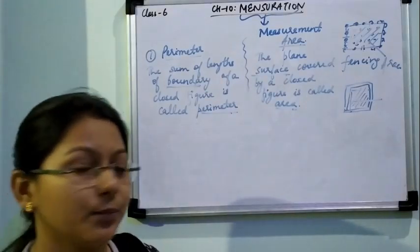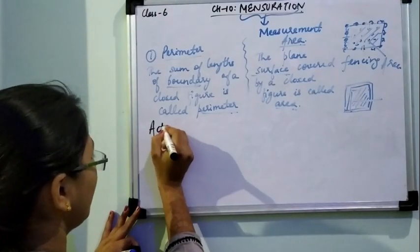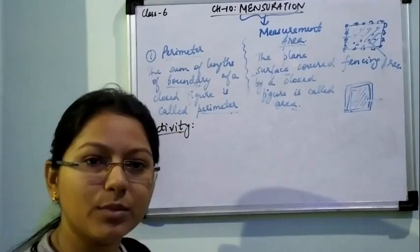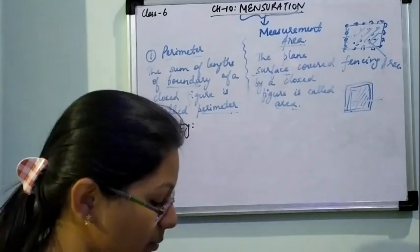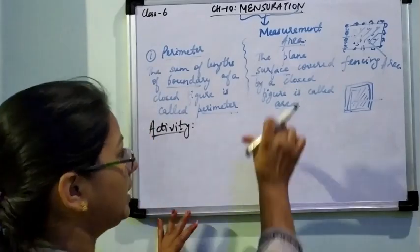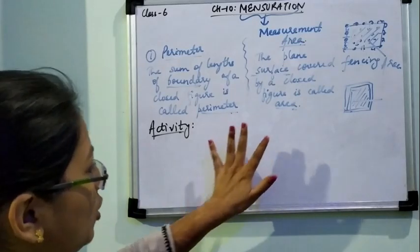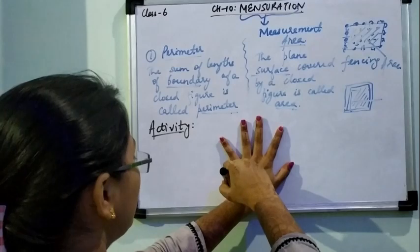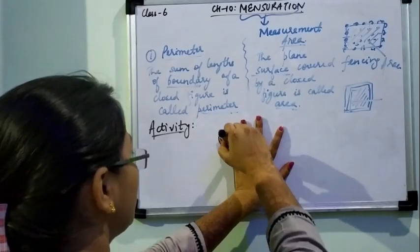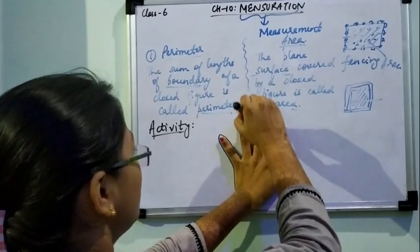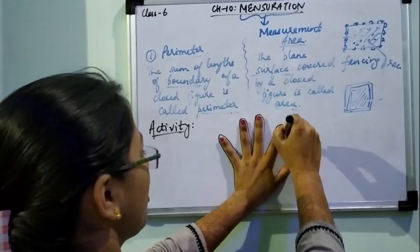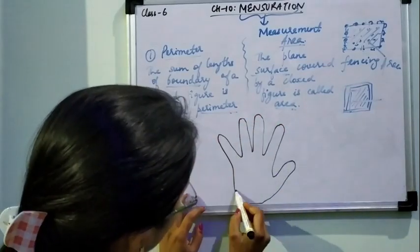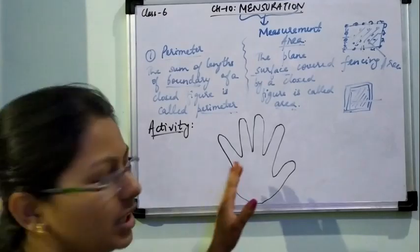Today I am giving you one activity which you have to perform. You all must be having graph paper with you. Take one complete graph paper and then place your hand on it like this. Then with your pencil, trace your hand on the graph paper. In this way, I have traced my hand on the graph paper.